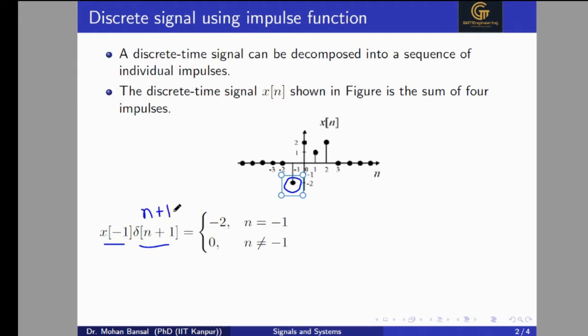δ(n+1) means that n+1 equal to zero, which represents the location n equal to minus one. So we can see that we have a given impulse at n equal to minus one. We write x(-1) to show the value — its value is minus two for n equal to minus one, and zero for n not equal to minus one.